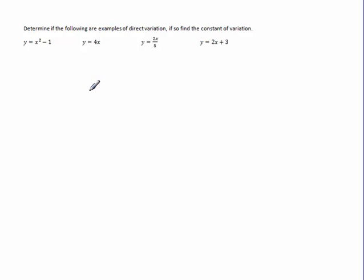So here it asks us to determine if the following examples are direct variation. If so, what's the constant variation? Well, here I have x squared. That's kind of weird, so I'm going to say no on that one. And remember, direct variation, y equals k times x. Well, y equals 4 times x, so yes. I'm going to say yes here, and my k value is 4.